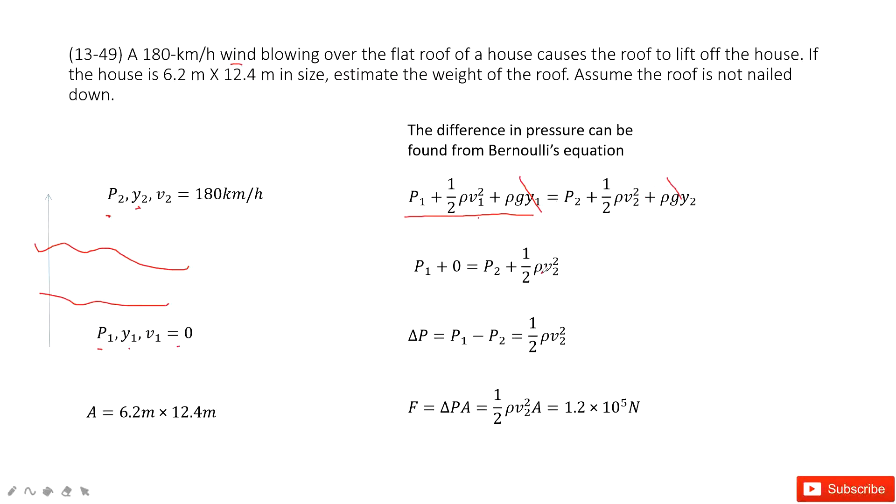Now we can write it in this way. Now we find the difference for pressure. Delta p equal to p1 minus p2 equals one half rho v2 squared. This one, we get the pressure difference.